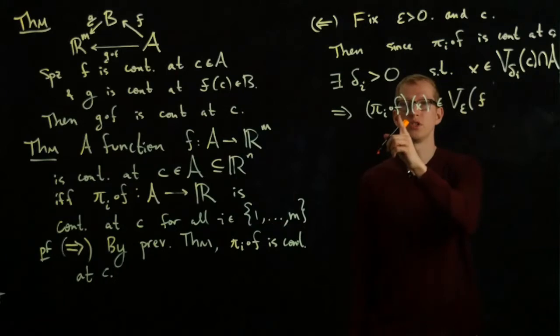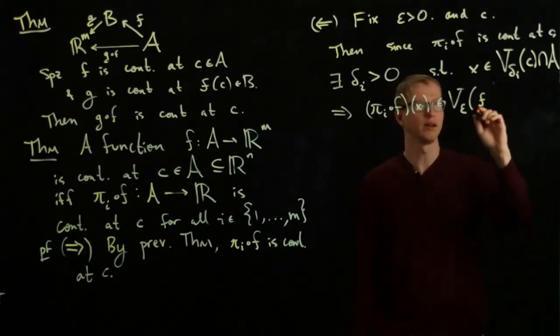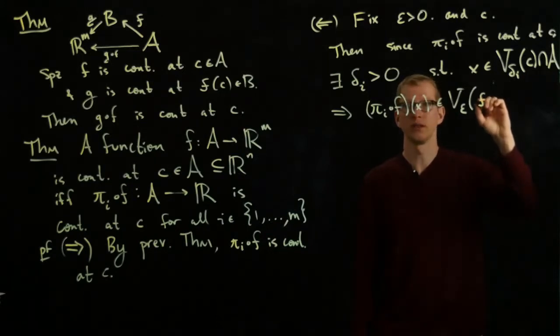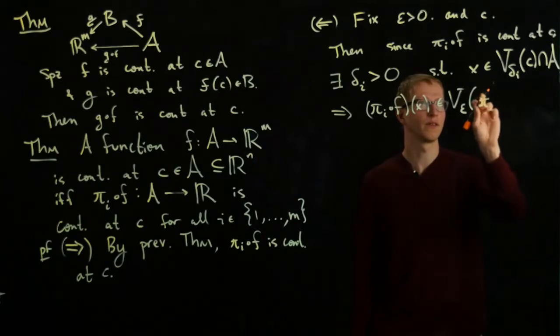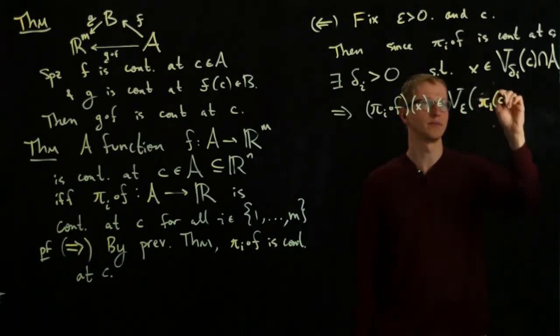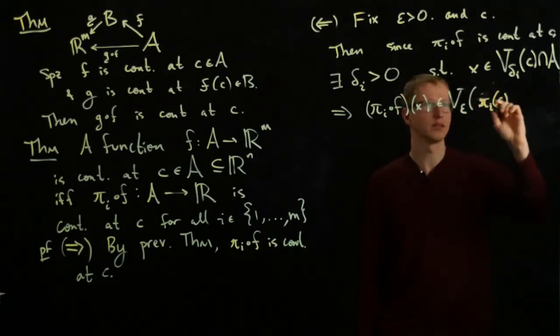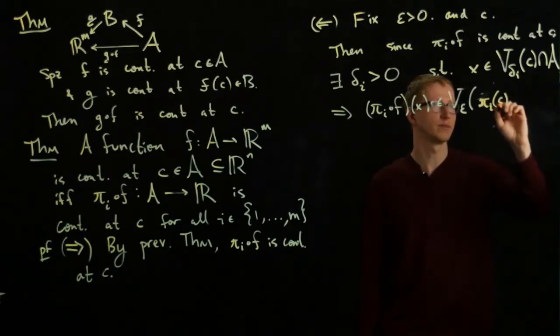Well, the image of F of X, which is C, which is actually the image of, let's write this properly, is pi_I at C, at F of, at F of C. Sorry about that.